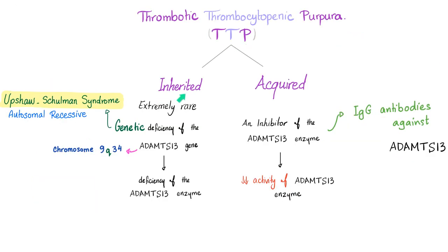We have two types of TTP. Inherited TTP is extremely rare — it's a genetic disease called Upshaw-Schulman syndrome. It's autosomal recessive, very rare. There is an actual deficiency of the ADAMTS13 gene, located on chromosome 9q34. This leads to deficiency of the ADAMTS13 enzyme.